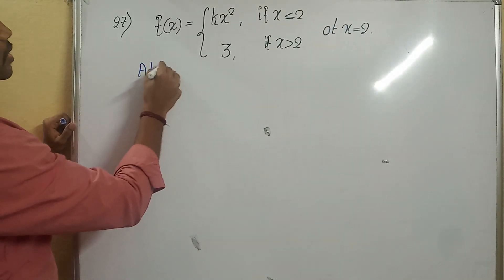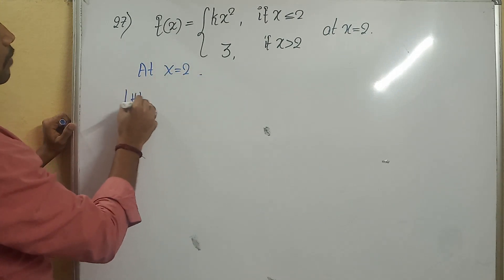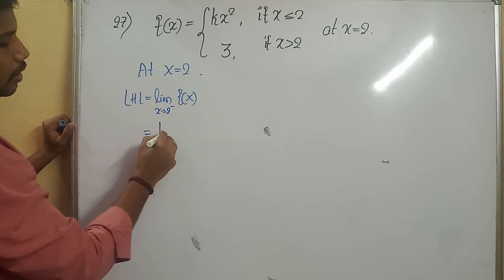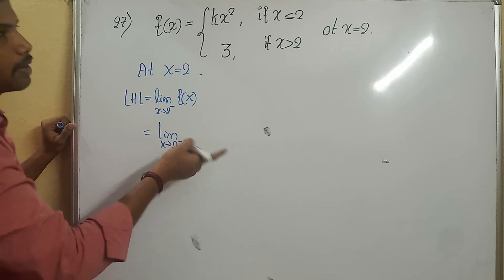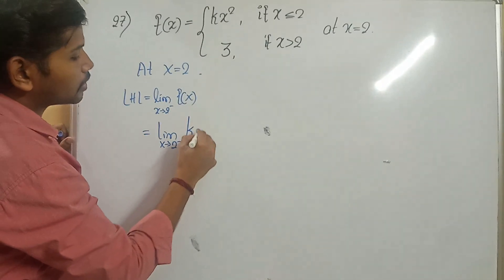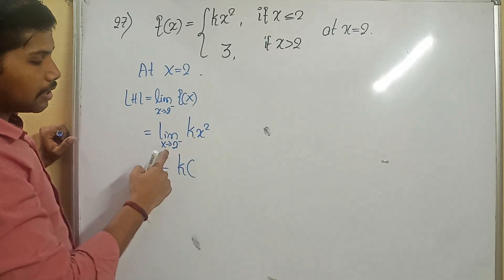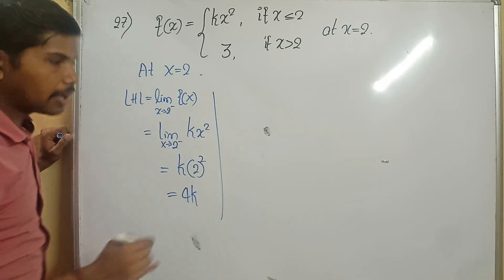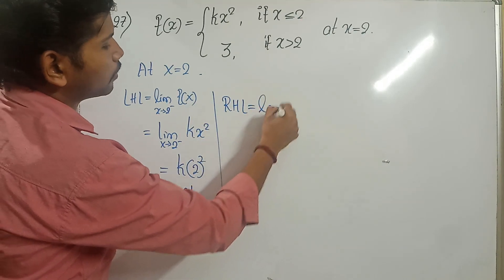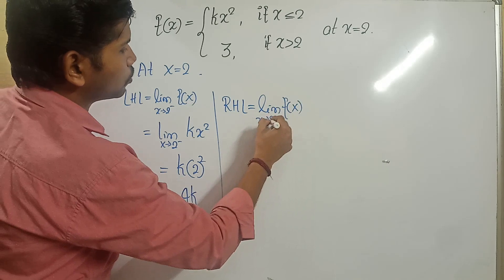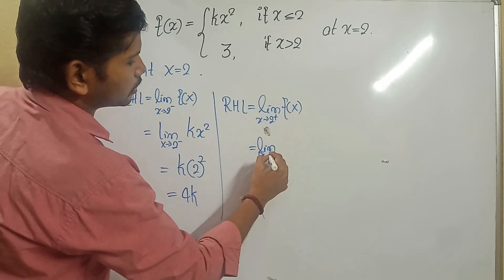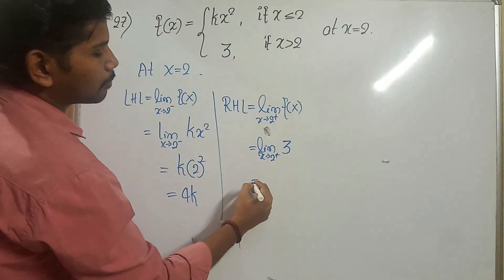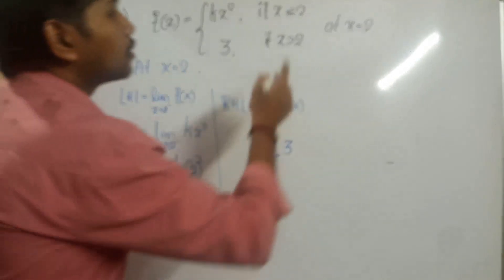At x=2 it is continuous. What is the LHL value? Limit of f(x) as x tends to 2 minus. Now, 2 minus means less than 2, so the function is kx². Let it be k, and x is replaced by 2, so 2 squared is 4k. The RHL value: limit of f(x) as x tends to 2 plus. 2 plus means greater than 2, so its value will be 3 — the limit of a constant gives the constant.